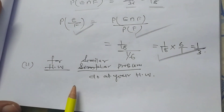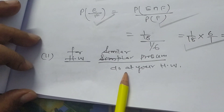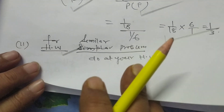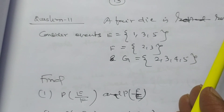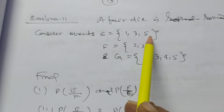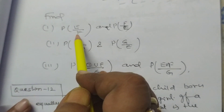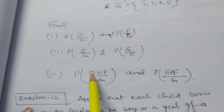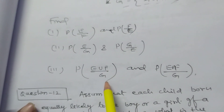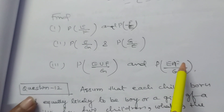Now I want to discuss some more problems from the sample paper. This is your homework: Problem number 11. A fair die is rolled. Consider events E = {1,3,5}, F = {2,3}, and G = {2,3,4,5}. Find P(E|F), P(F|E), P(E|G), P(G|E), and P(E∩F|G).